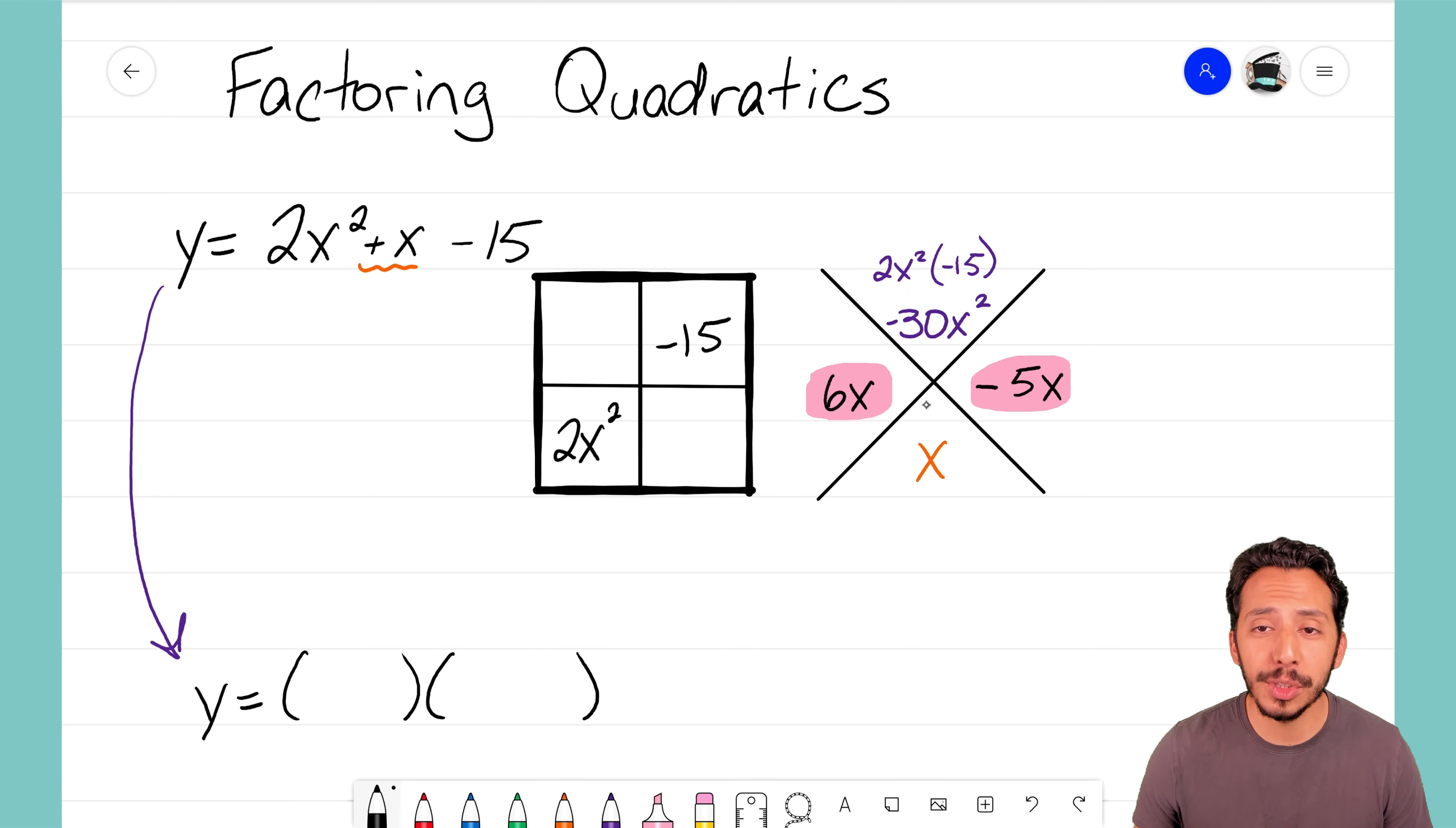Those are the two numbers that we want to now put into our generic rectangle for those remaining boxes. And now we have a complete generic rectangle where now we just have to find the sides or the dimensions for that rectangle. So let's go ahead and do that.